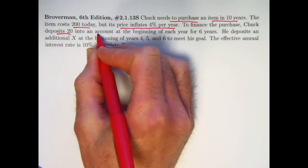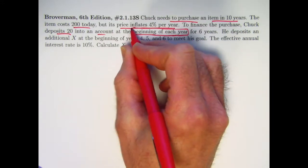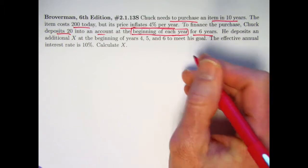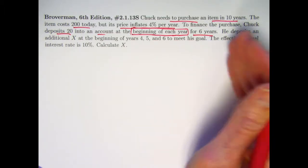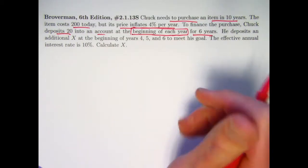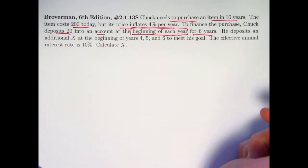Chuck deposits 20 into an account. Here's something different: at the beginning of each year, starting right away at time zero for six years, not the end of each year. That's why this can be thought of as an annuity due. I'm actually going to think of it as an annuity immediate first, and then I will talk about what an annuity due is.